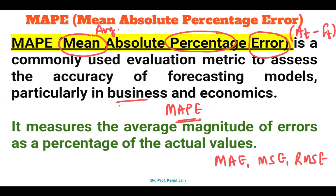Normally we utilize it in the domain of business and economics — for example, in the finance domain we use it majorly — because it measures the average magnitude of error as a percentage of the actual value. We can conclude that this particular model is forecasting with this level of accuracy for stock market forecasting, or that this model is this accurate for figuring out fraud or risk management.